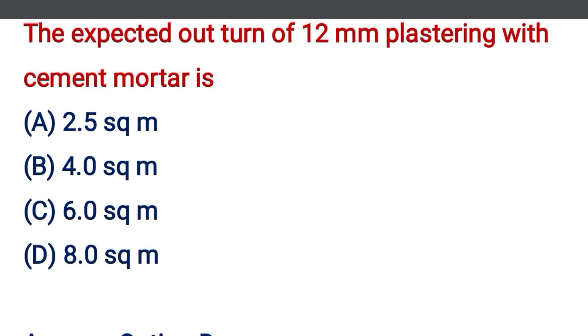The expected outturn of 12 mm plastering with cement mortar per mason per day is — option A: 2.5 square meter, option B: 4 square meter, option C: 6 square meter, option D: 8 square meter.